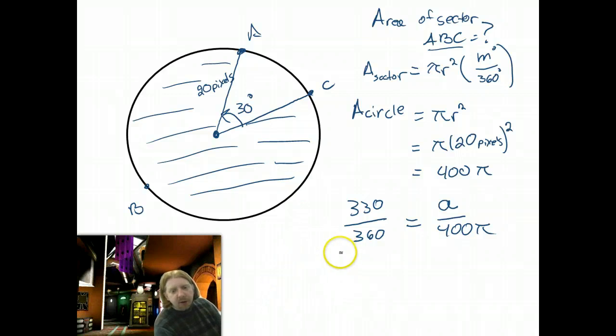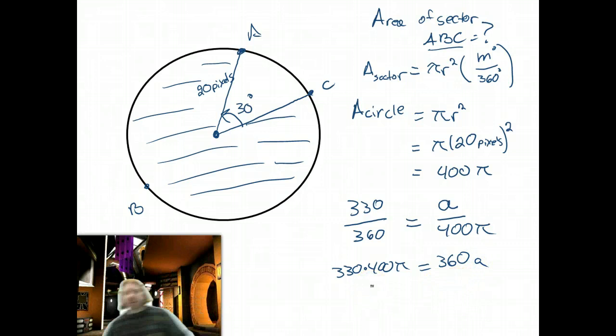So now I can go ahead and cross multiply. So 330 times 400 pi is equal to 360a, which simplifies. And I'm going to go ahead and go straight to my – I'm going to stay in terms of pi until the very end.